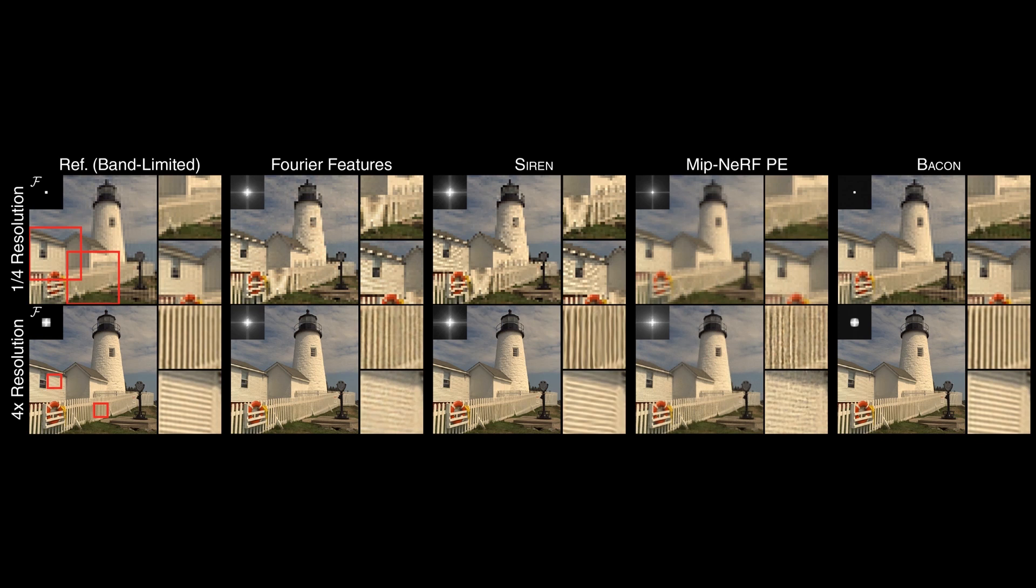We adapt the scale-aware positional encoding of MIPNERF for this task, and after supervision at multiple scales, it learns anti-aliasing. Outputs of BACON closely match a low-pass filtered reference image, also without aliasing.